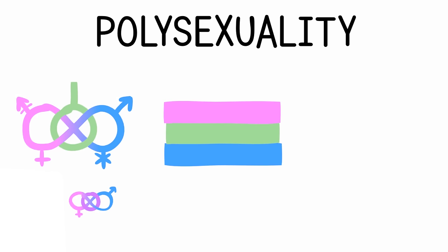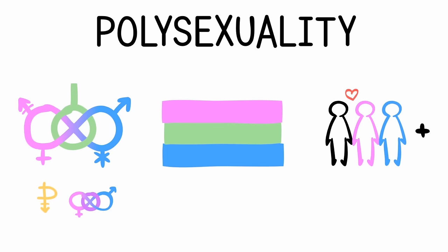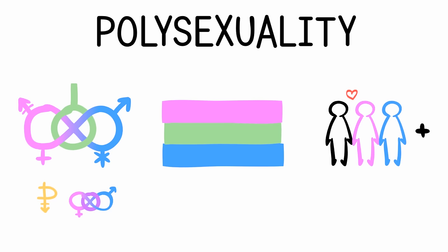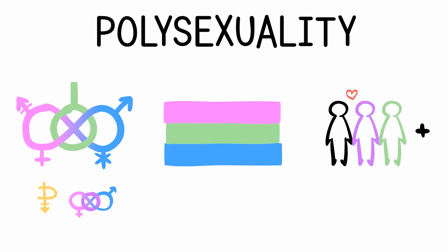5. Polysexuality. Polysexuality refers to people who are attracted to two or more genders. Typically, bisexuality and pansexuality are types of polysexuality, though not all people who are polysexual use these terms.